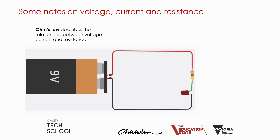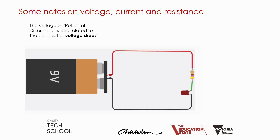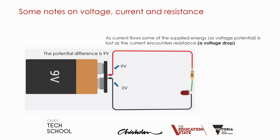Ohm's law describes the relationship between voltage, current, and resistance, where V equals voltage, I equals current, and R equals resistance. If the resistance is increased, the current decreases. The voltage or potential difference is also related to voltage drops. In our circuit the potential difference across the battery supplying the circuit is 9 volts, measured in reference to the zero point or the negative side of the supply. As current flows, some of the supplied energy is lost as the current encounters a resistance — this is known as causing a voltage drop.